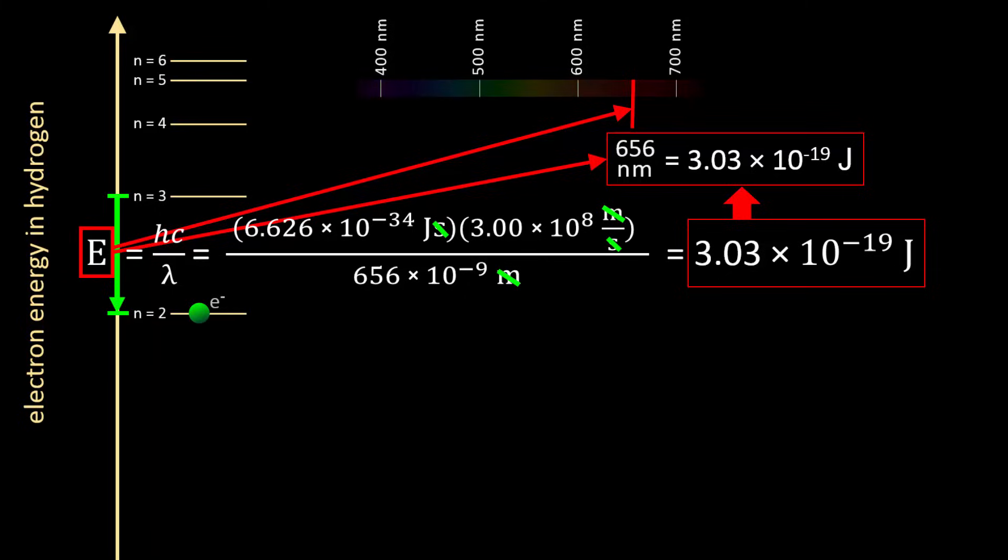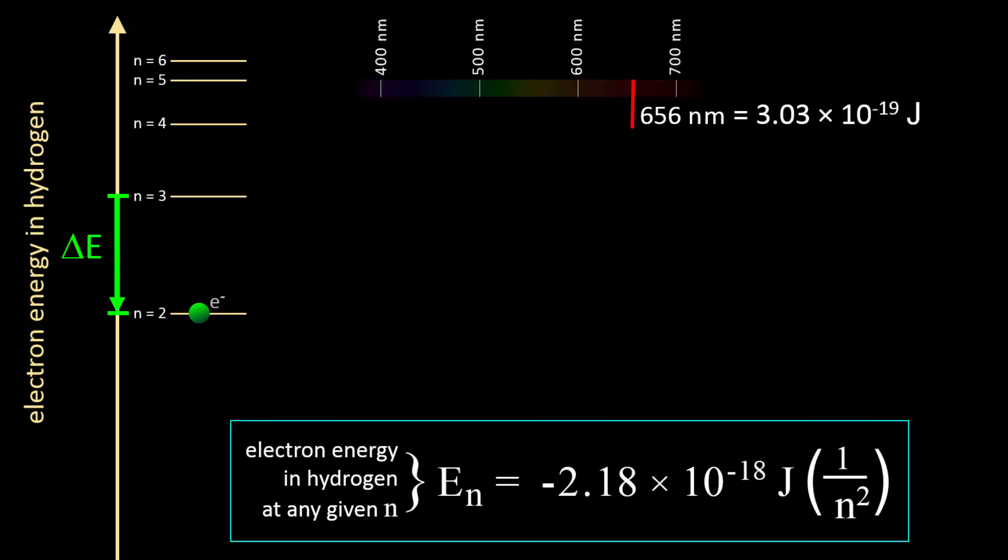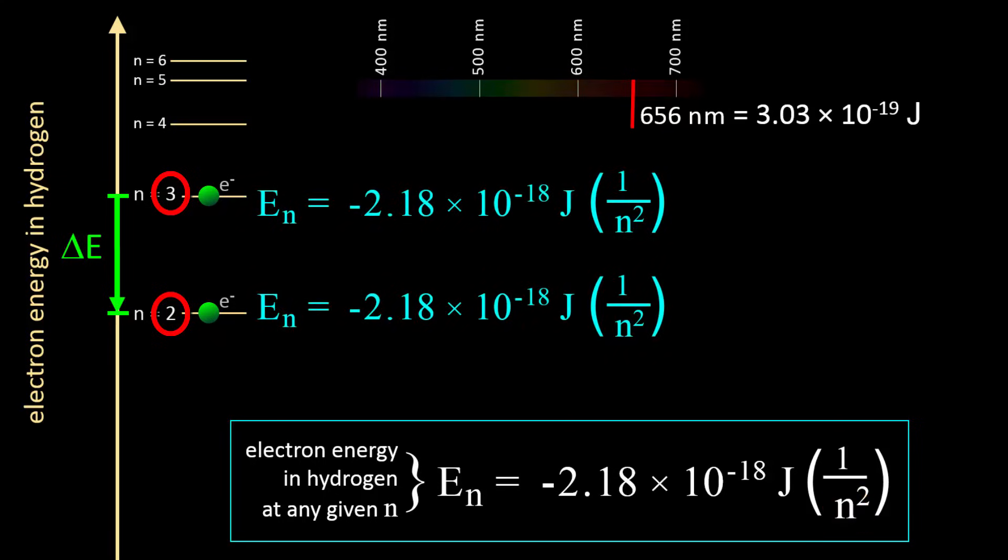In Bohr's model, that would also be the energy difference of the electron transitioning from n equals 3 energy to n equals 2 energy. The energy of an electron in hydrogen at any given n can be calculated using this equation derived from Rydberg's analysis of atomic emission spectra. Let's plug in the two integers from n to find the electron's energy at n equals 2 and n equals 3.